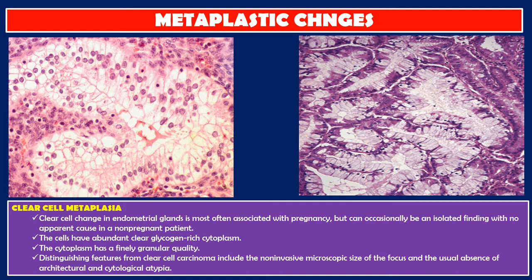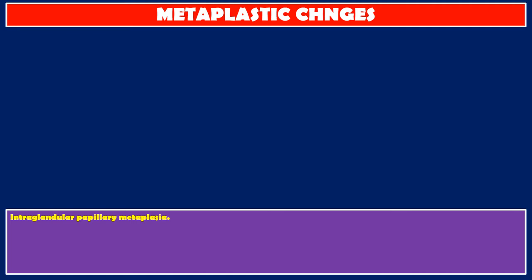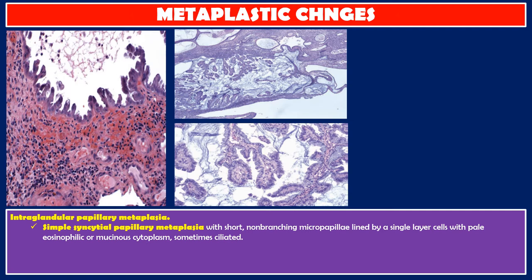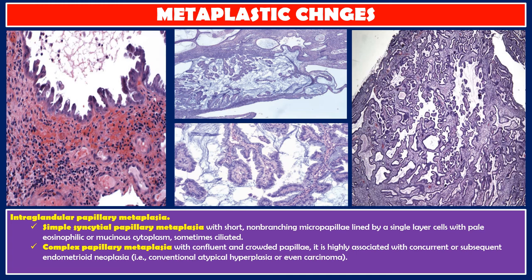Intraglandular papillary metaplasia: simple syncytial papillary metaplasia with short non-branching micropapillae lined by a single layer with pale eosinophilic or mucinous cytoplasm, sometimes ciliated. Complex papillary metaplasia with confluent and crowded papillae is highly associated with concurrent or subsequent endometrioid neoplasia, that is conventional atypical hyperplasia or even carcinoma. The absence of significant nuclear atypia separates complex papillary metaplasia from carcinoma.